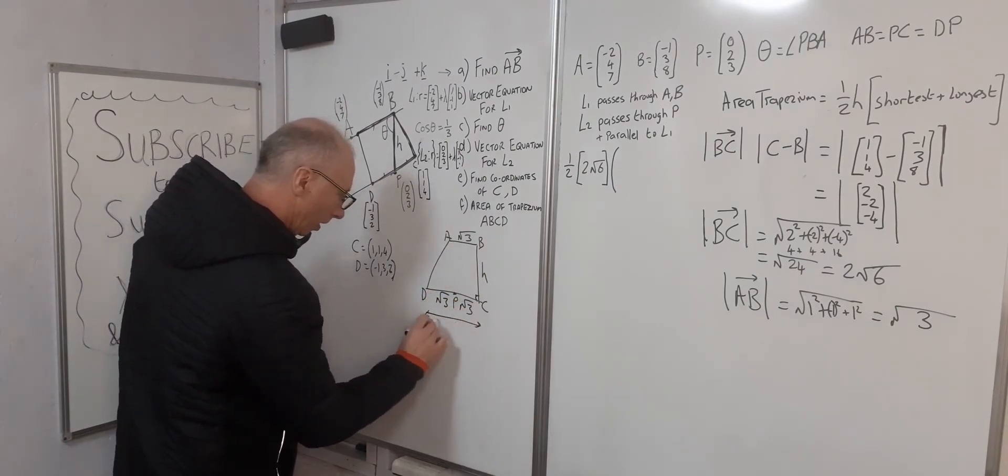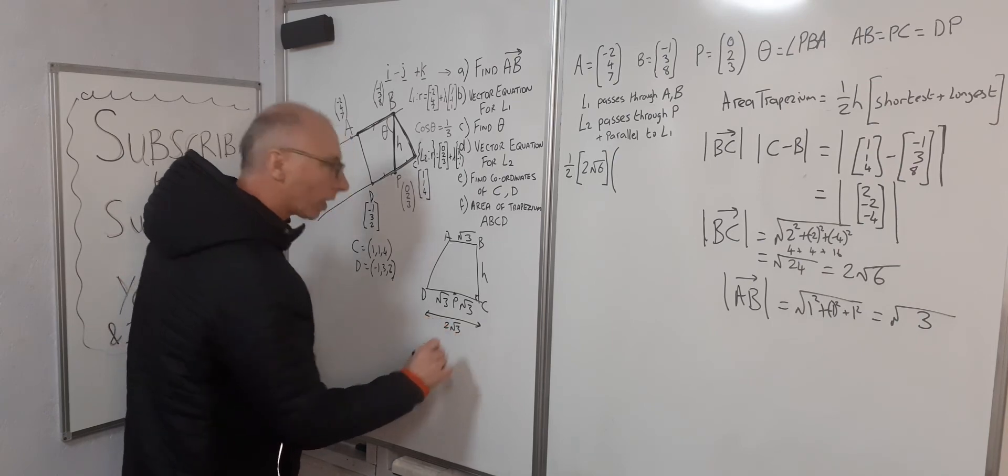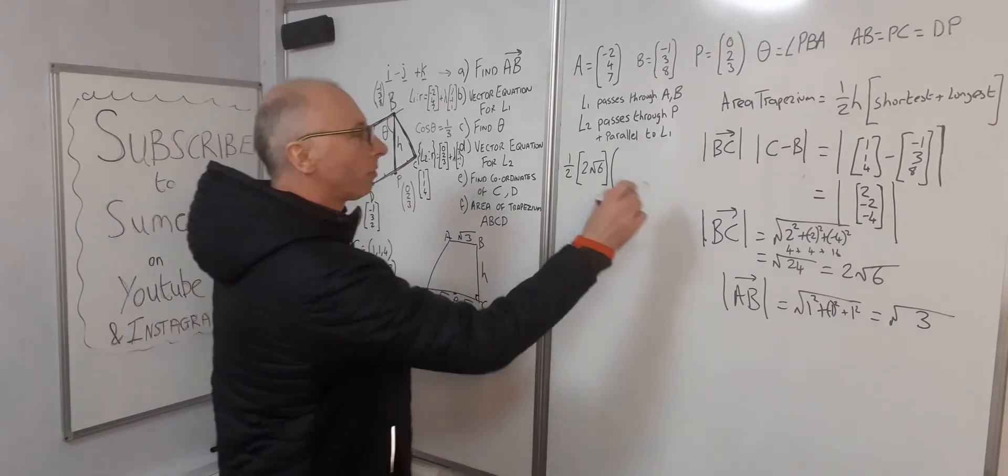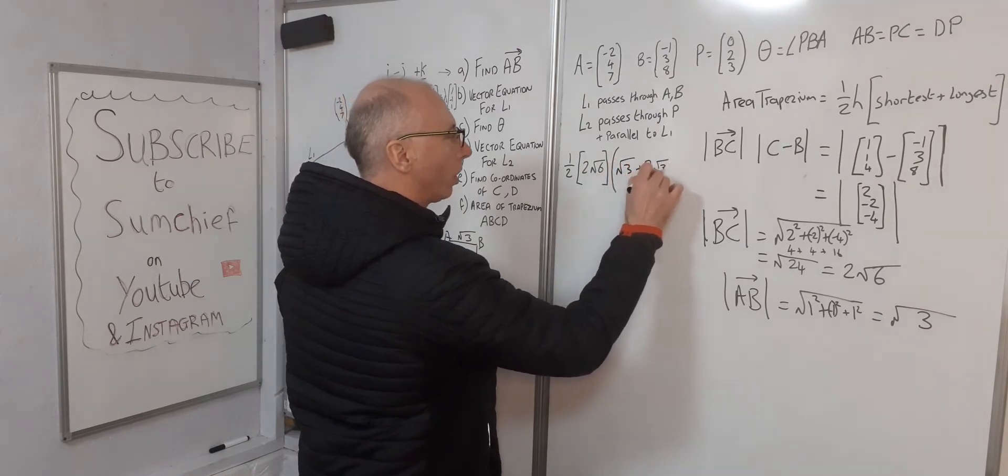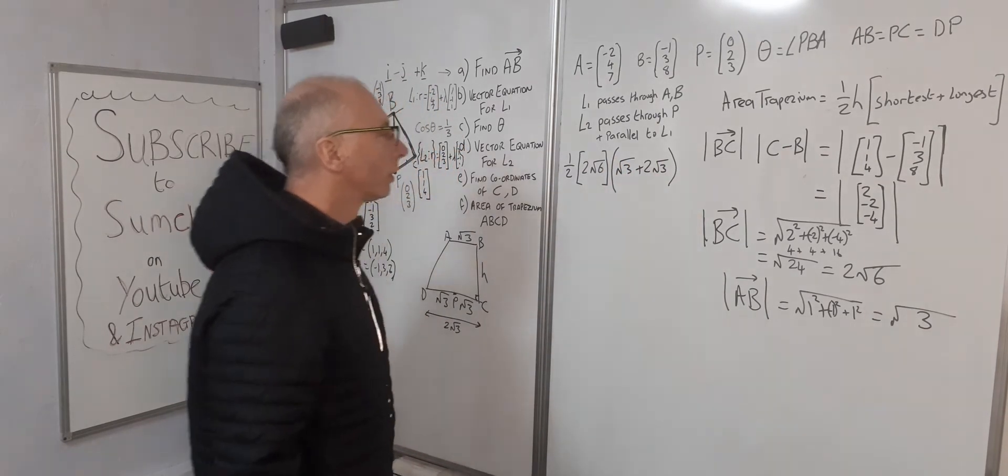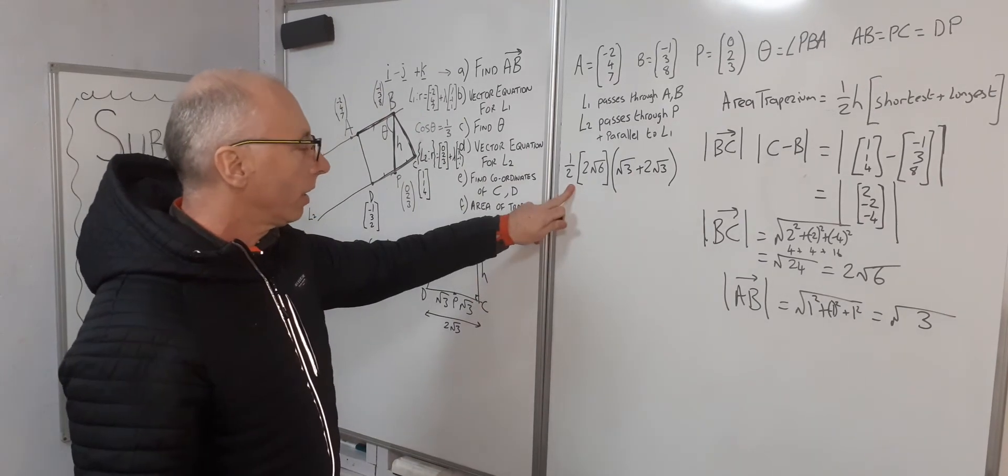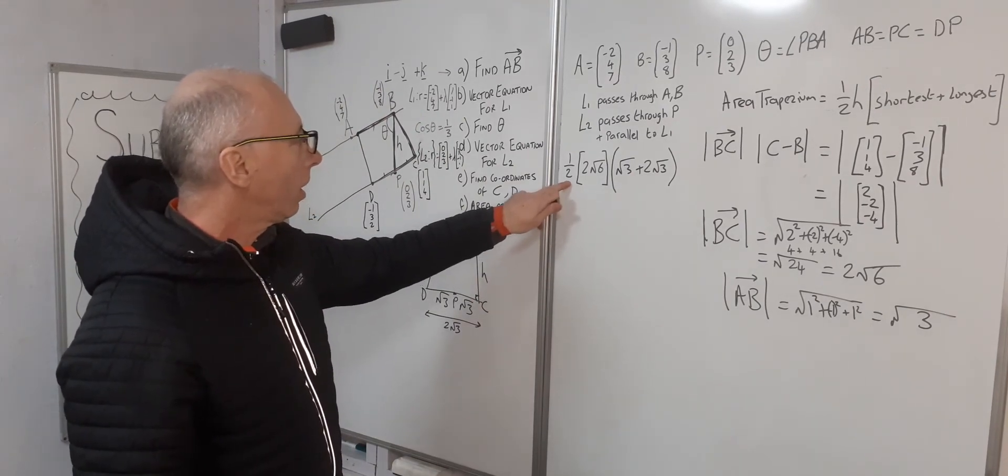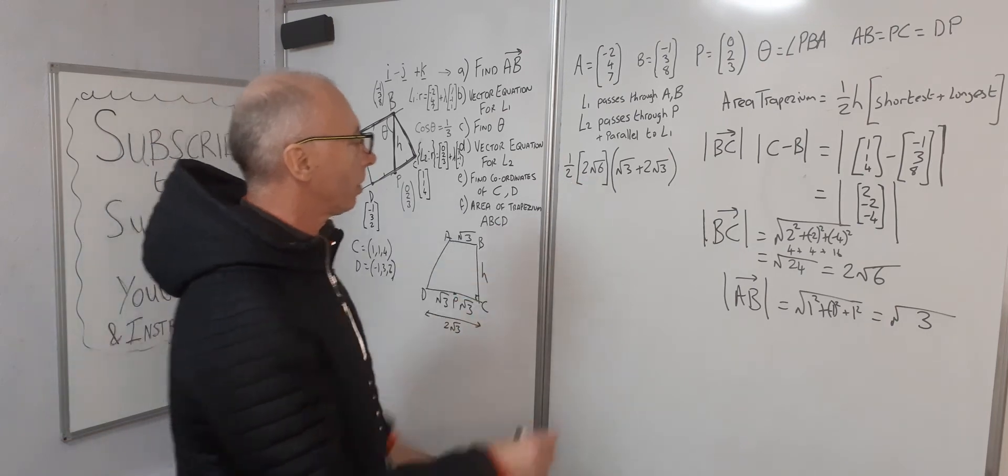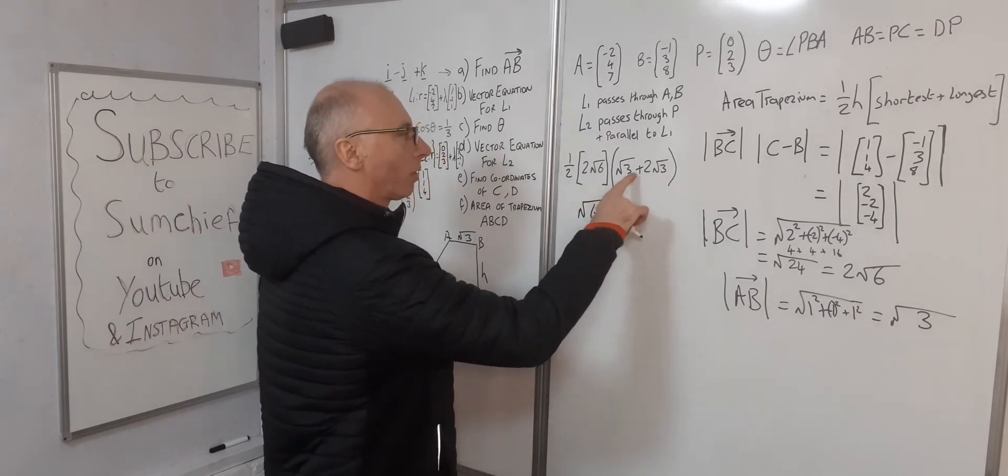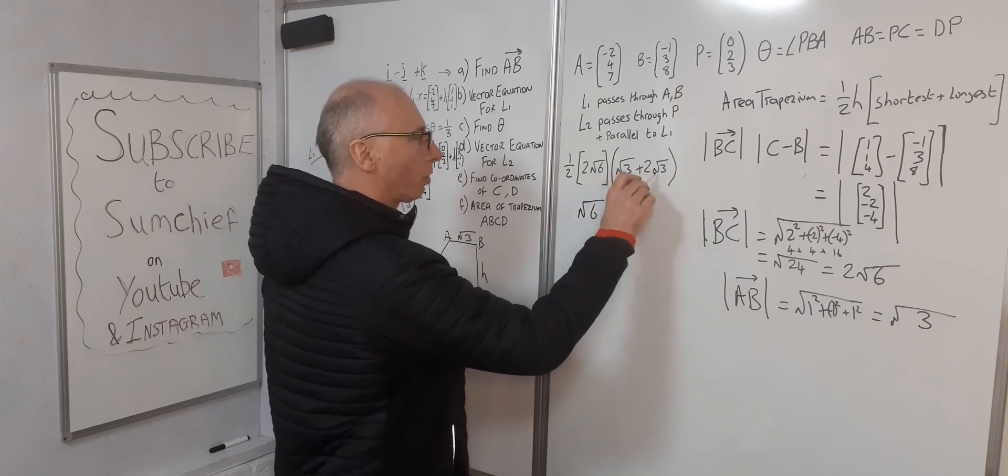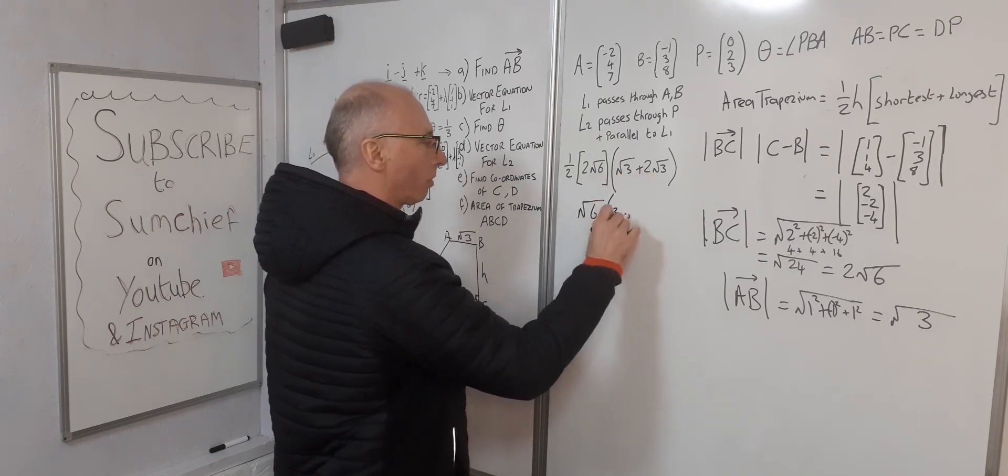So now we can write in here √3 + 2√3. Okay, simplify this up a bit. Half times two, that'd just be one, so that's √6 times 3√3. 2√3 plus 1√3 is 3√3.